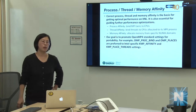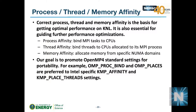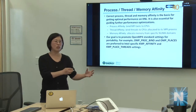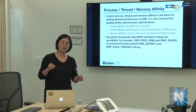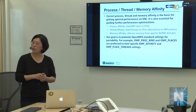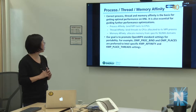For running jobs, there are 68 cores per KNL node with four hyperthreads each, totaling 272 logical CPUs. Process affinity binds MPI tasks to specific CPUs; thread affinity binds OpenMP threads to CPUs allocated to their MPI task. Good affinity is essential — if all MPI tasks pile onto one core, performance will suffer. The goal is even distribution without over-allocation.